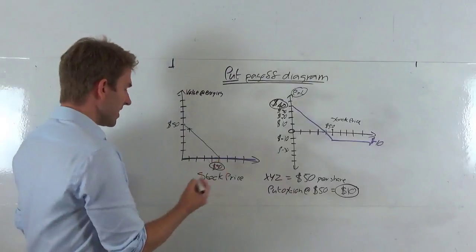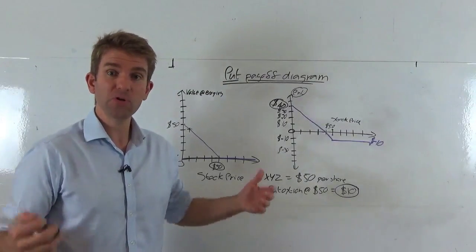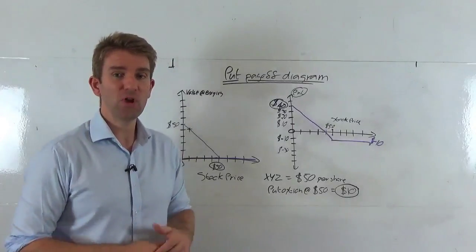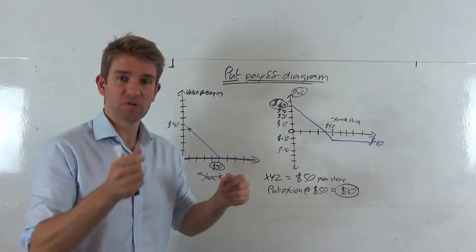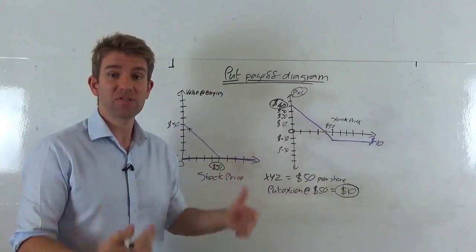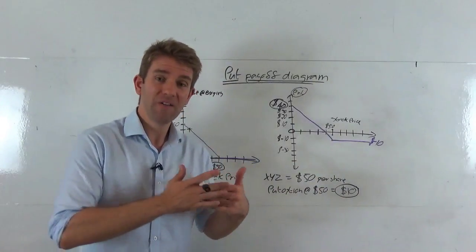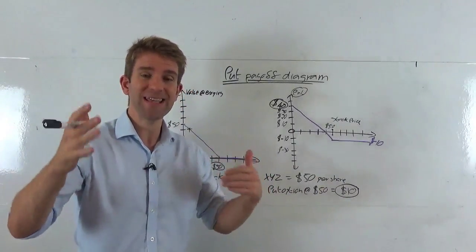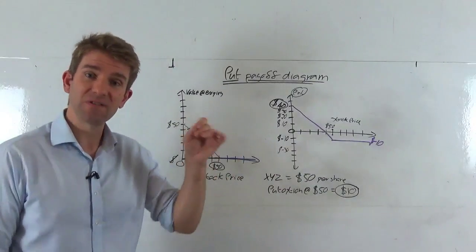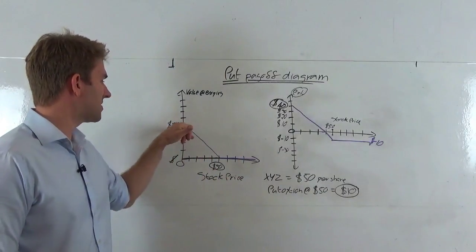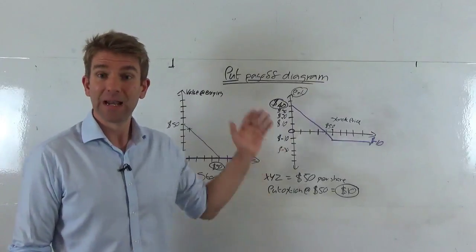Let's say the company went bust and it's trading at zero dollars — would that be good for us if we bought a put option? Yes, because we've bought the right but not the obligation to sell 100 shares per contract at $50, in something now trading at zero. We would exercise that contract. The value of that option is fifty dollars: the strike price minus the underlying price.